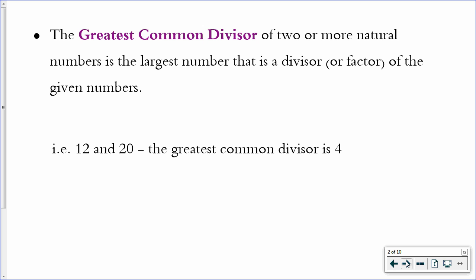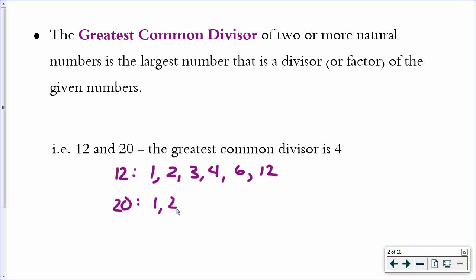If I'm looking for the greatest common factor of 12 and 20, I could think about writing the factor list. The factors of 12 include 1, 2, 3, 4, 6, and 12. These are all of the numbers that go into 12 evenly — that's what factors are. And the list for 20 includes 1, 2, 4, 5, 10, and 20. I look for the one that they have in common that's the greatest — that's what greatest common factor literally means.